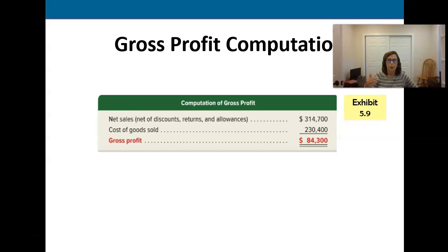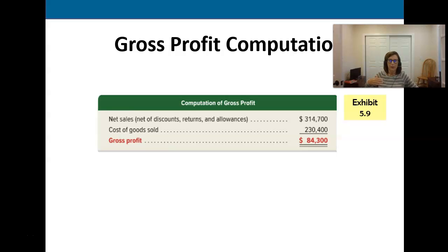From gross profit is where we start subtracting our expenses — our rent, our payroll, our utilities, all of those things. Once we've subtracted all our expenses from that, it gets us to net income.